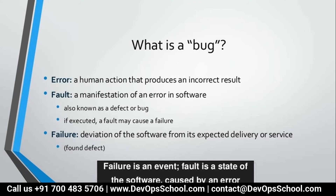Bug is the deviation between expected and actual result. For example, if you are expecting a four-hour session but I only take two hours, your expectation is not met — that is a defect. Bug and defect are the same thing. As per ISTQB there is no difference between bug and defect, but the Indian Testing Board has a distinction.